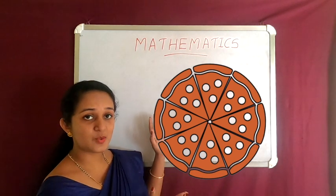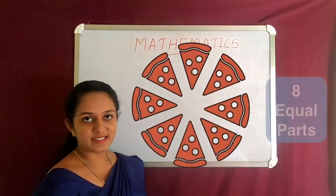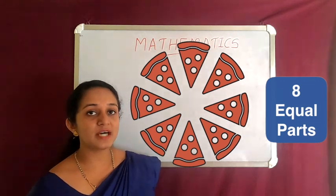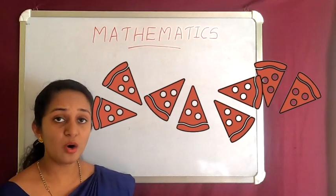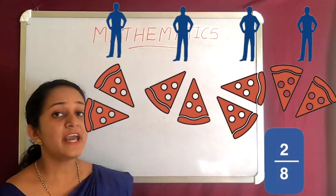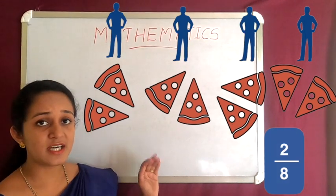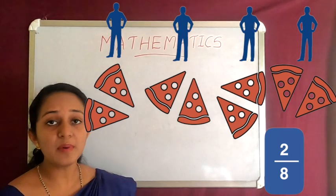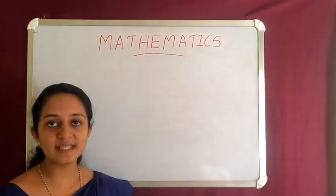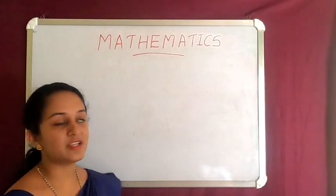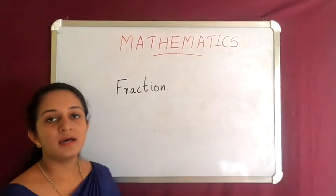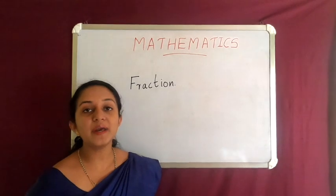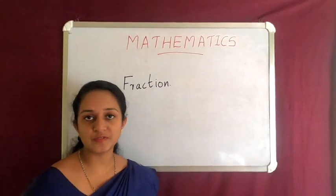Here we divide the pizza into eight equal parts, so each one of you will get two parts out of eight. We can say that each one of you had two by eight part of pizza. The numbers of this form are known as fractions. So, what is a fraction? A fraction means a piece of something, or a part of something.